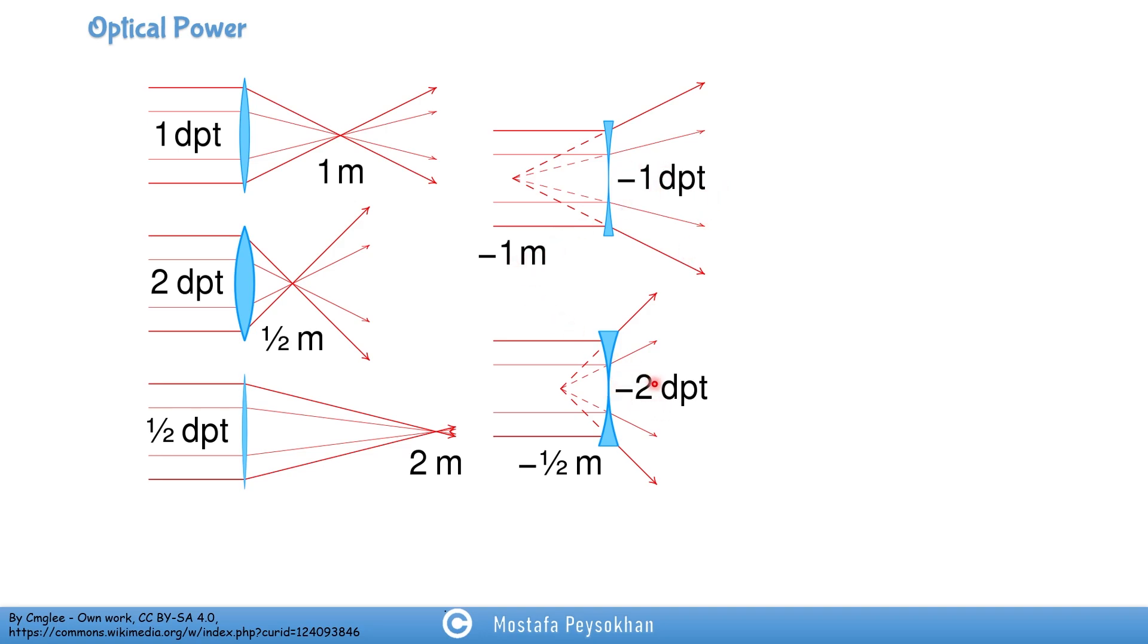This lens, negative two diopters is stronger, it's closer. So it's negative one half of a meter, that's the distance, but the optical power is negative two diopters.